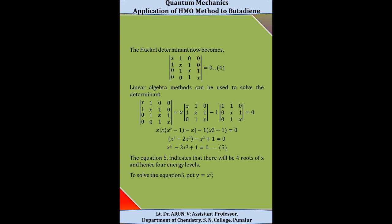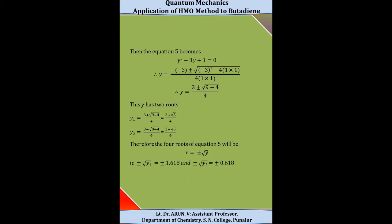Linear algebra methods can be used to solve this determinant. By solving this determinant, we get a polynomial equation: x⁴ − 3x² + 1 = 0. This equation indicates that there will be 4 roots of x and hence 4 energy levels. To solve this equation, we put y = x², so the equation becomes: y² − 3y + 1 = 0.